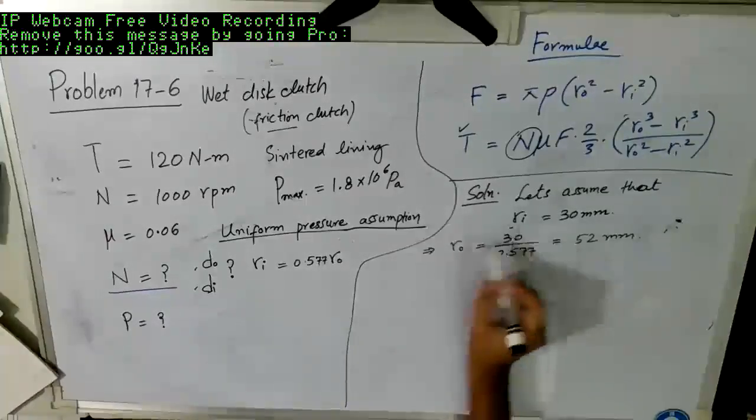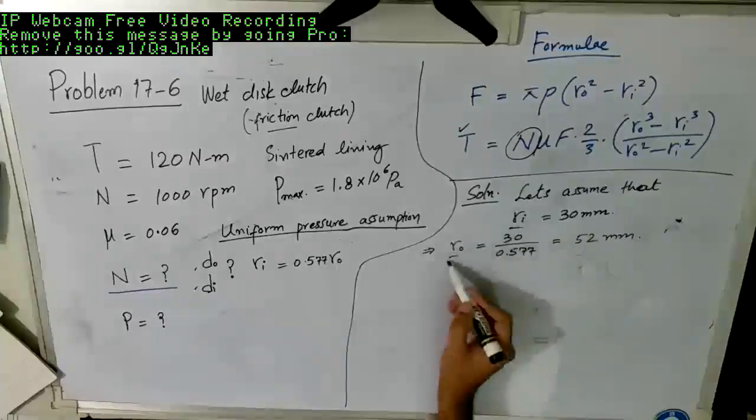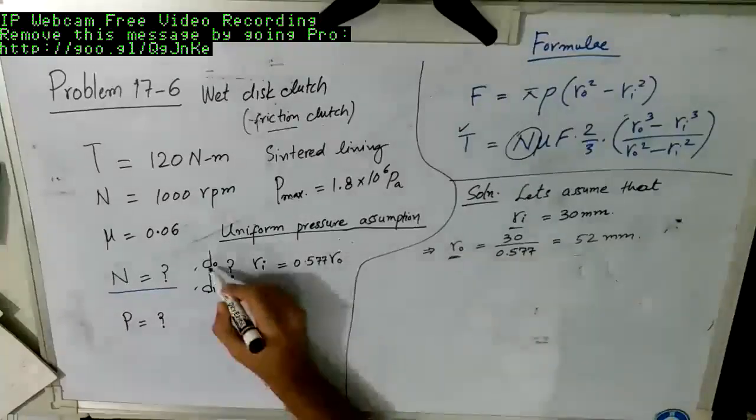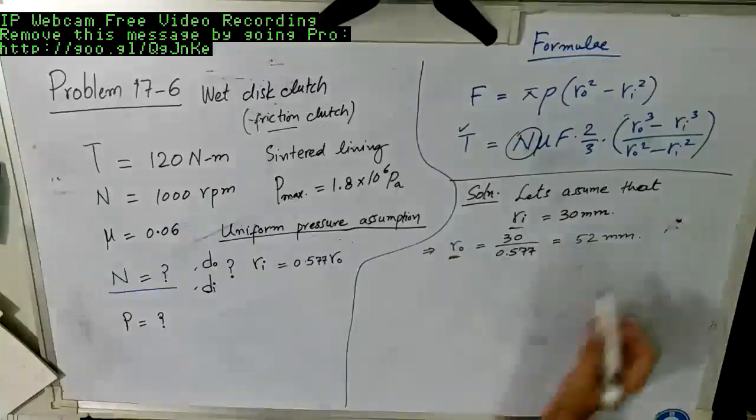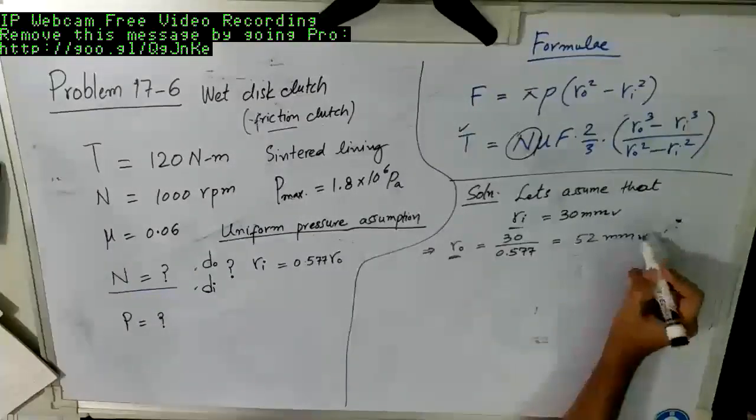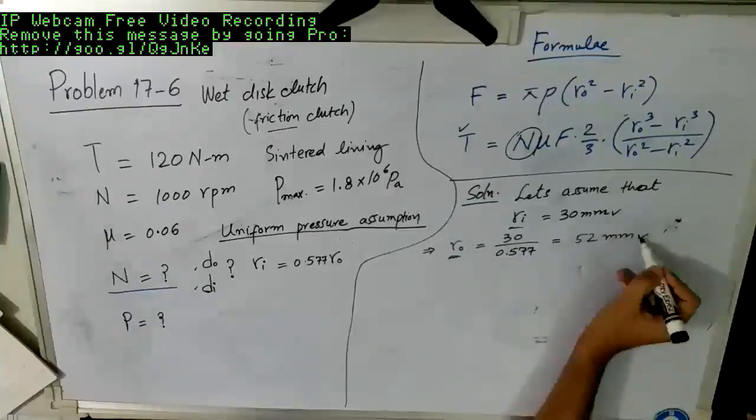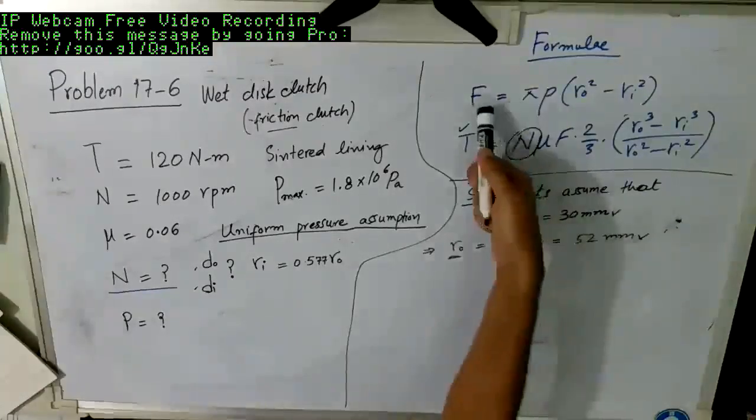Now that we know R inner and R outer, we just have to multiply it by 2, and we will find out D outer and D inner. So that part is done, and more importantly, we now have these two values, and these two values can be used to find out the actuation force.